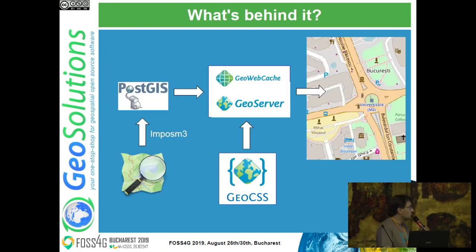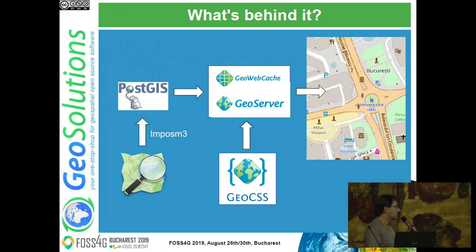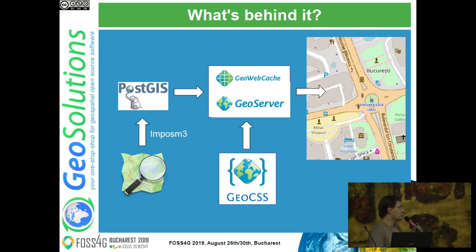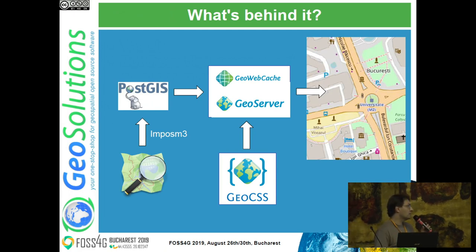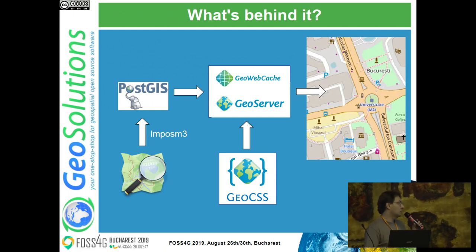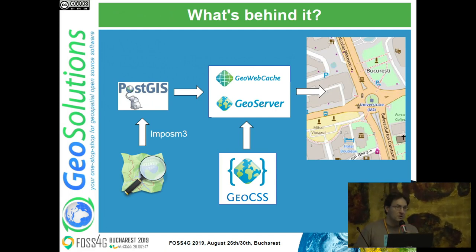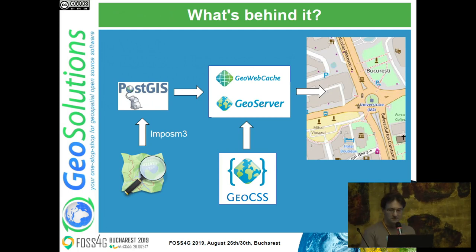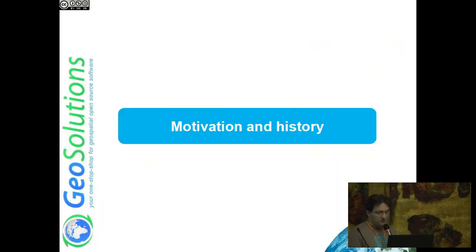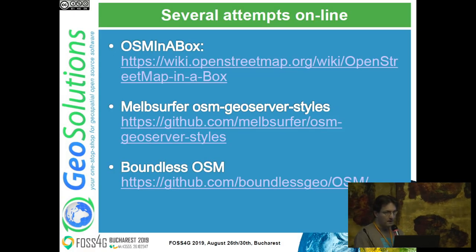So what's behind it? How did we get an OSM clone going with GeoServer? We get the raw data from OpenStreetMap, we use imposm3 to turn it into a PostGIS database, then we use GeoWebCache and GeoServer to render it and cache it, and we use the GeoCSS language to prepare the styles, because the styles are big.